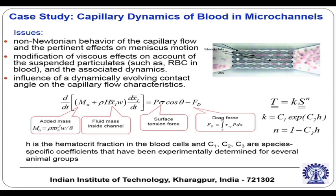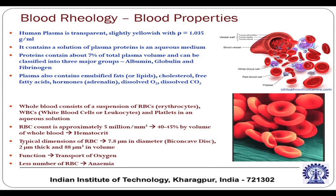In medical applications, you do not always expect equations and expressions to be derived from first principles. The expressions for k and n given here are not derived from first principles but are curve-fitted from a huge number of experimental data collected over the years. Some coefficients C1, C2, C3 appear in this context. Before getting into what C1, C2, C3 should be and on what parameters they depend, let us quickly revisit the blood properties.